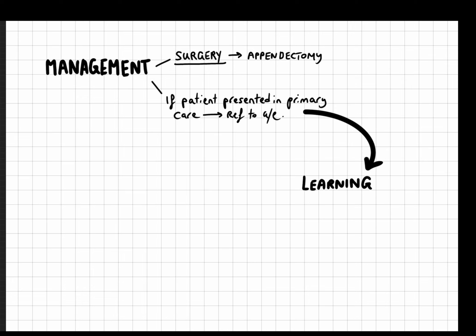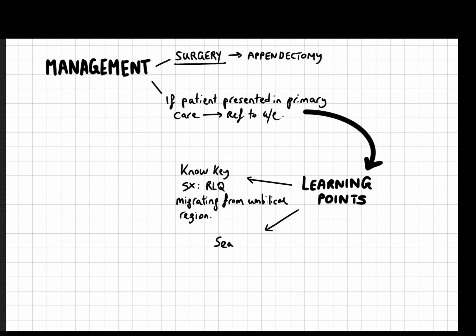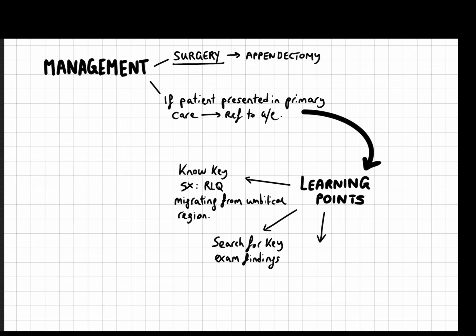What are the key learning points? The most important thing regarding appendicitis is to recognise the classic presentation, which includes pain migrating to the right lower quadrant — the hallmark of diagnosis. A thorough history and examination will guide you through the differential diagnoses listed previously. And depending on the clinical setting, imaging studies such as abdominal ultrasound or a CT scan should be used to confirm the diagnosis.